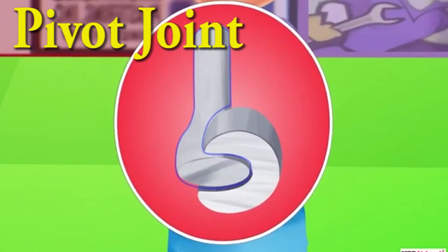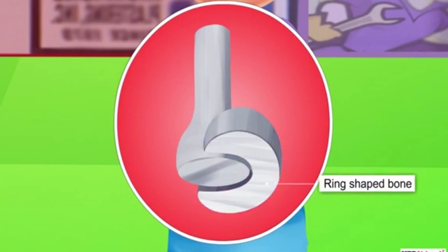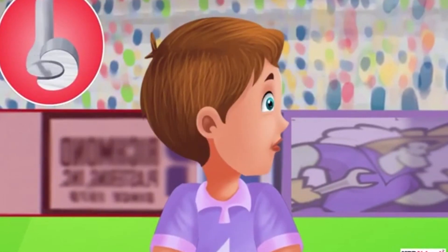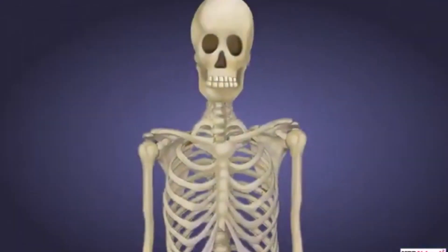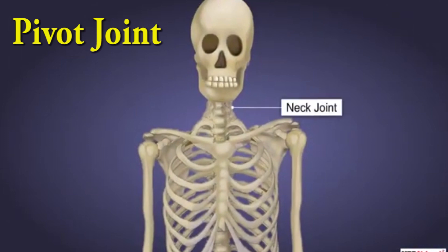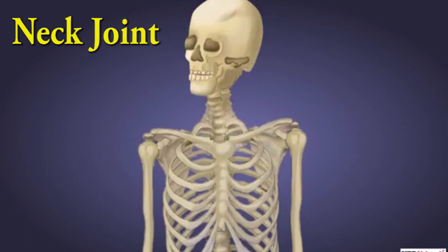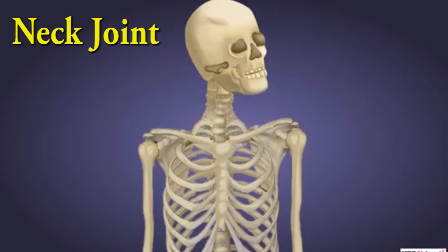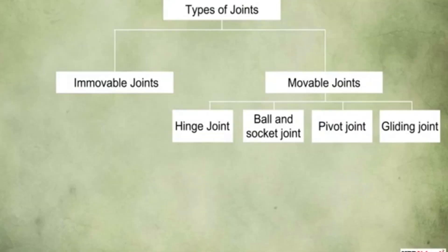The next type is the pivot joint. In this type of joint, one bone acts like a cylinder and fits into the end of another bone which is like a ring. The first bone rotates inside the ring and allows easy movement of the body in different directions. An example of a pivot joint is the neck joint, which allows the movement of the neck sideways, upward, and downward, and even allows the rotation of the neck.